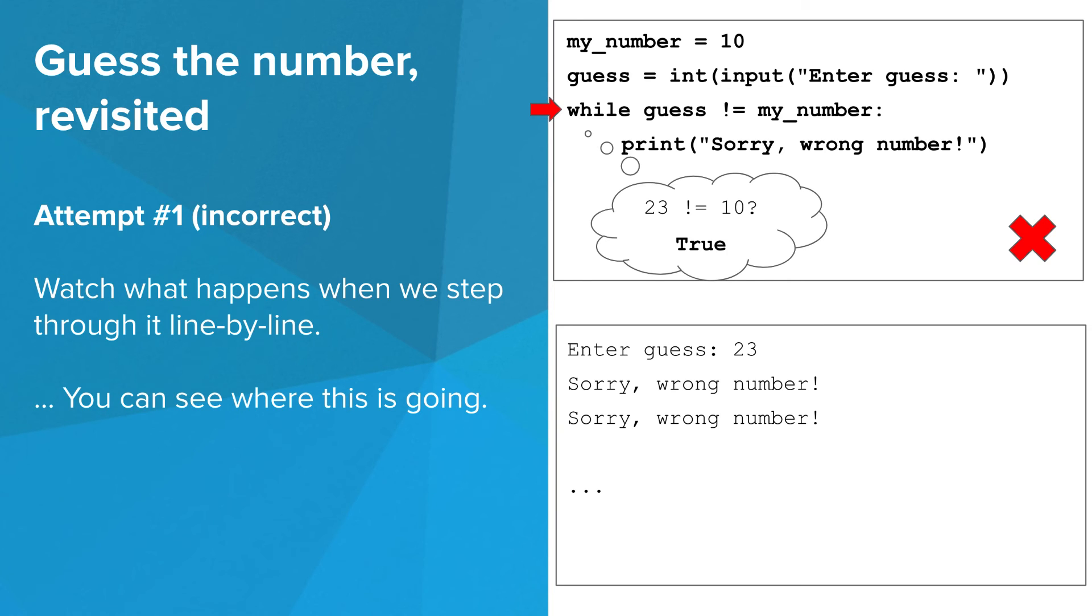It is important to make sure that the condition has a chance to change during the while loop. If you don't, you may end up with what is called an infinite loop. These are bad.